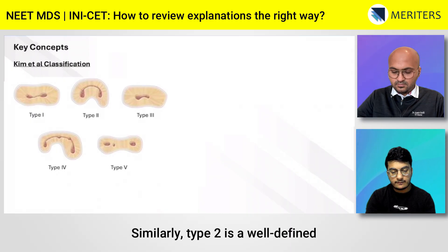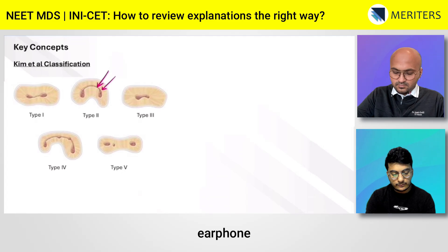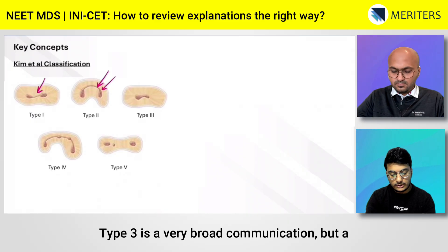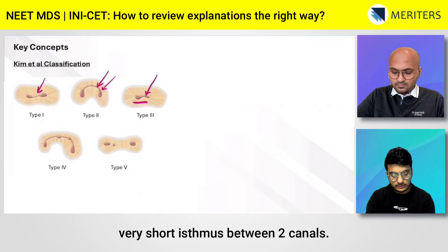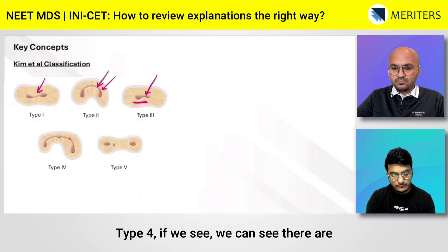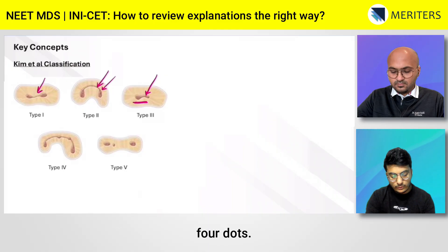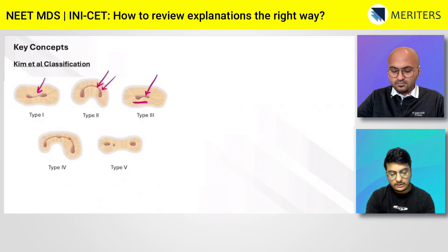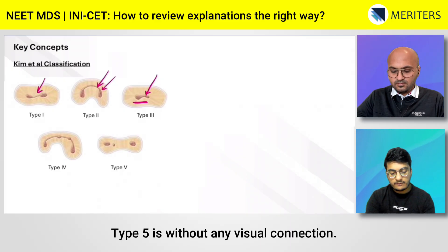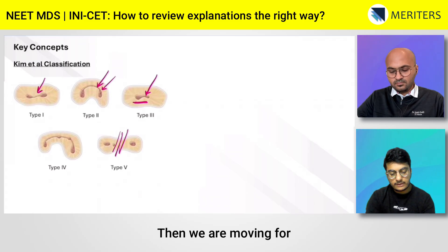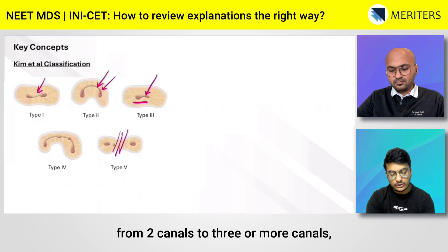Type 2 is a well-defined communication — it looks like a headphone shape. Type 1 has a very faint communication. Type 3 is a broad communication but with a very short isthmus between two canals, so type 3 is broad but short. Type 4 has four dots visible, representing three or more canals with either complete or incomplete communication. Type 5 is without any visual connection between canals.